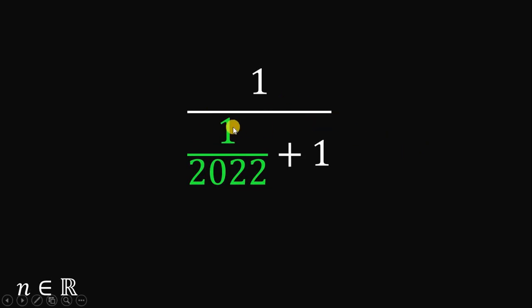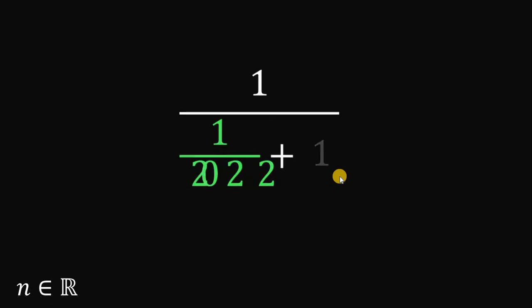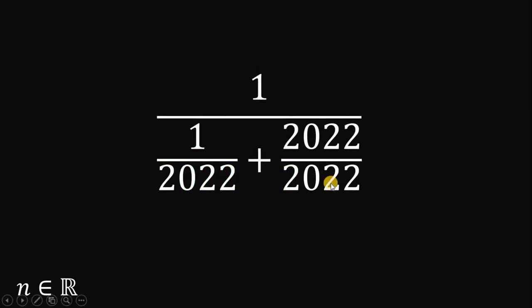So now we have 1 over 1 over 2022 plus 1. This 1 can be written as 2022 over 2022.